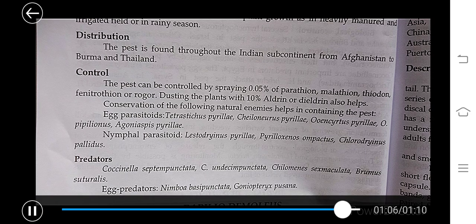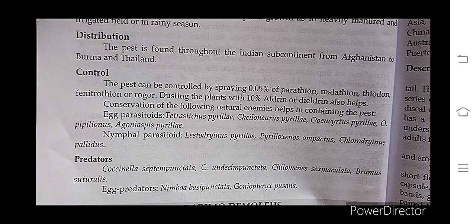This pest can be controlled by spraying 0.05 percent parathion, malathion, thiodan, phenthoate, or rogor. These are chemical methods for pest control. You can also dust the plant with 10 percent aldrin or dieldrin, which also helps to control this pest. These chemical methods help control the spread and damage caused by this pest.